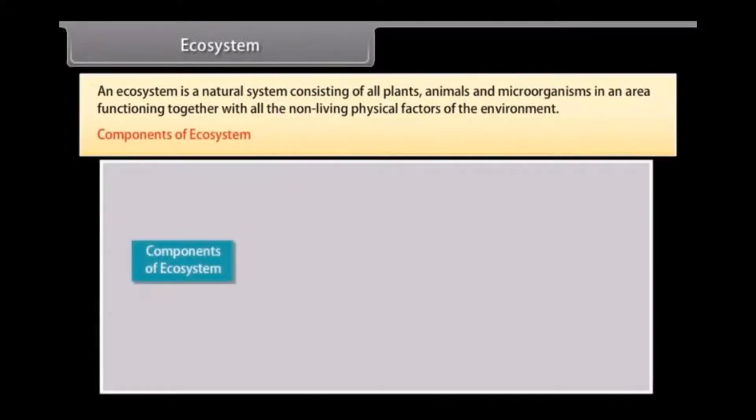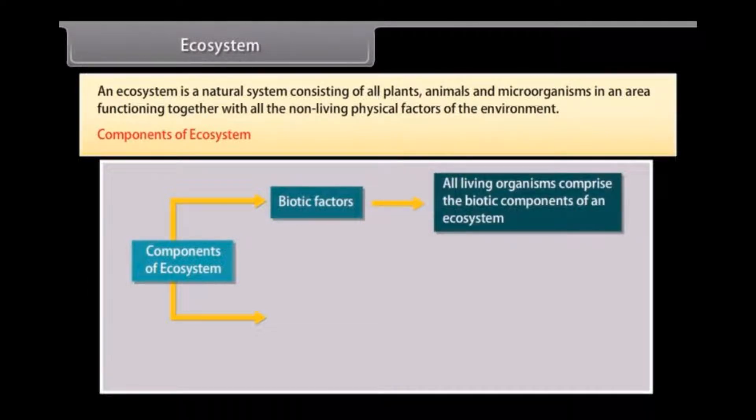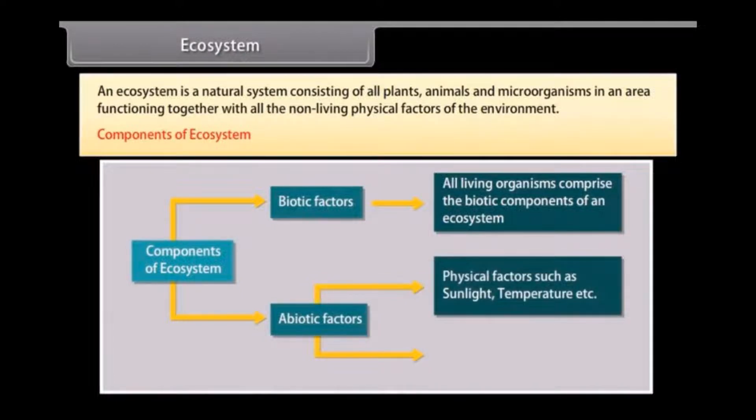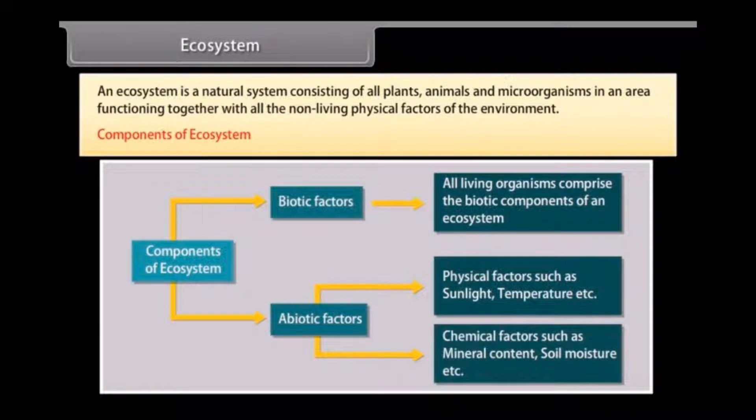Components of ecosystem. Ecosystem comprises the following two components: biotic factors including all living organisms, and abiotic factors that includes physical factors such as sunlight, temperature, chemical factors such as mineral content, soil moisture, etc.